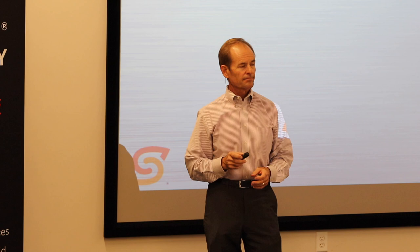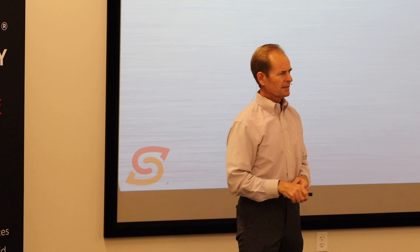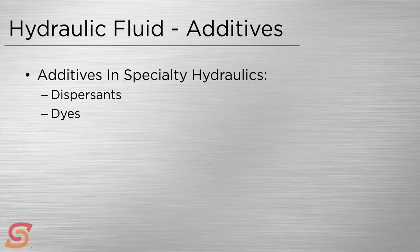Dyes are a completely optional additive in hydraulic oils, sometimes used for identification or leak detection. For example, there's a tractor hydraulic oil from Chevron that's dyed orange, and Kendall has a hydraulic oil for lift trucks that's dyed blue. You may or may not see dye out there.